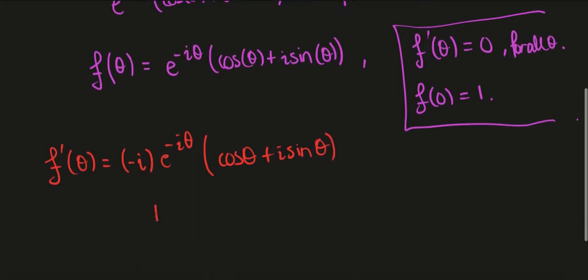Then we add e to the minus i theta and now differentiate the inside term which would give minus sine theta plus i cosine theta.